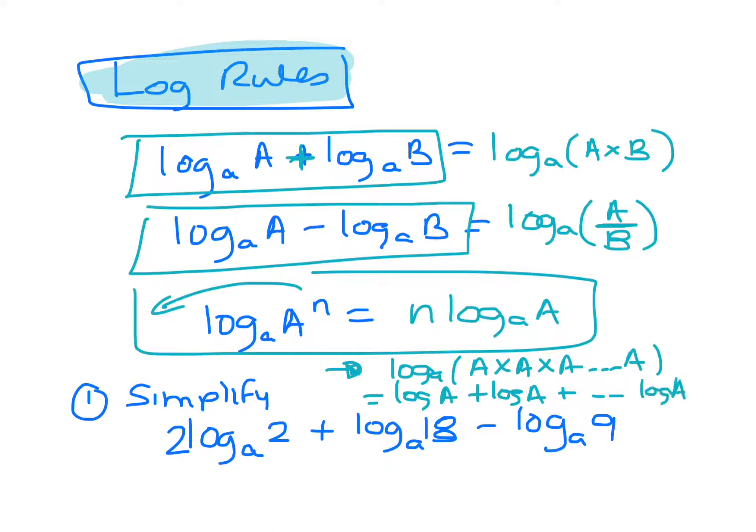So if you add the logs of those, that would be n lots of log a, because it's like having three plus three plus three plus three five times would be five lots of three. So this is log a plus log a plus log a dot dot dot log a, and we're doing that n times.